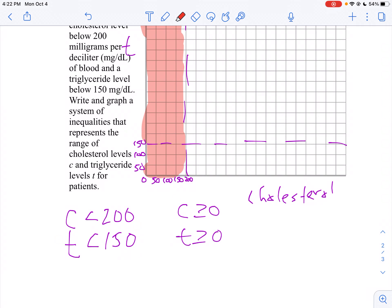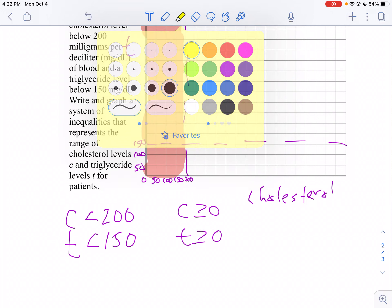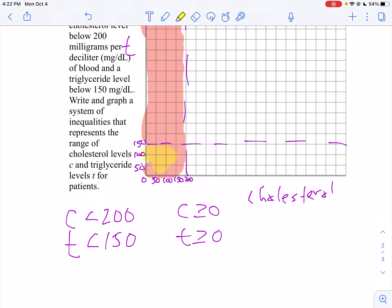And so the part that I'm interested in that will be double shaded would be this little area right here. There is your double shaded region. My solution is going to be right here. And that's all you have to do on a question like that.